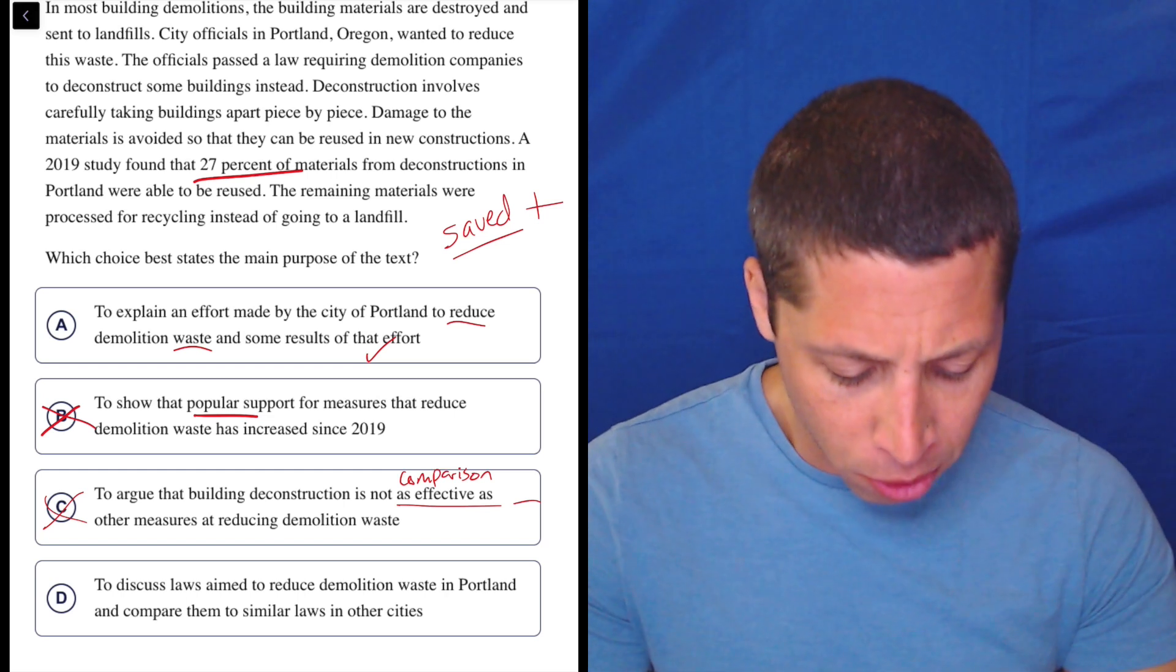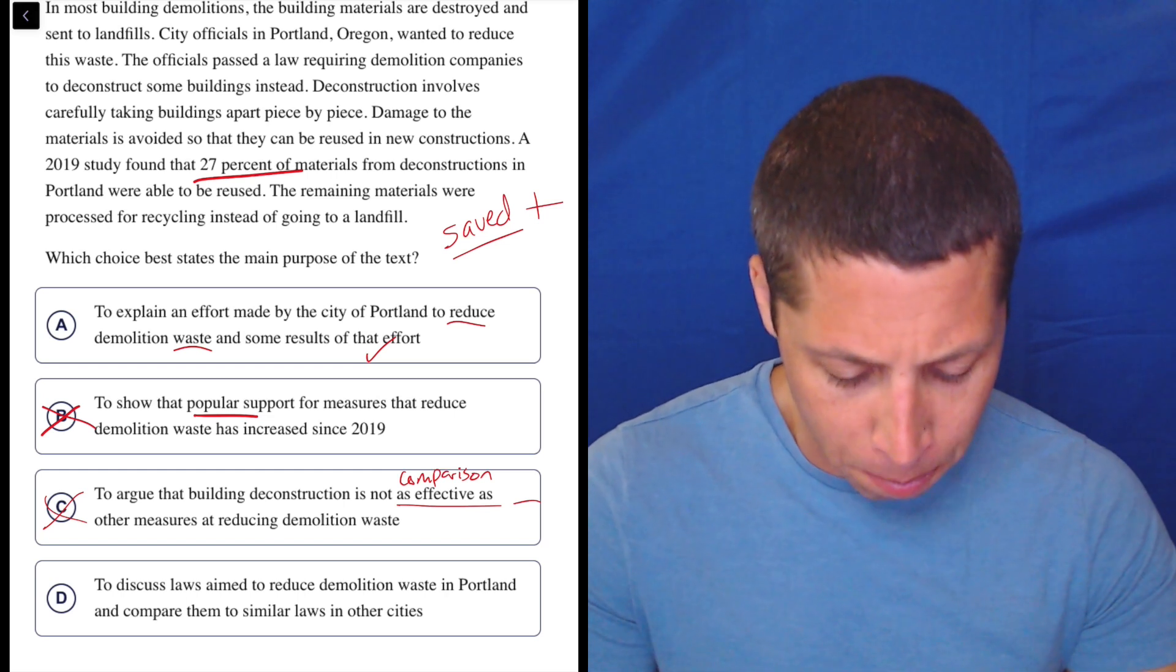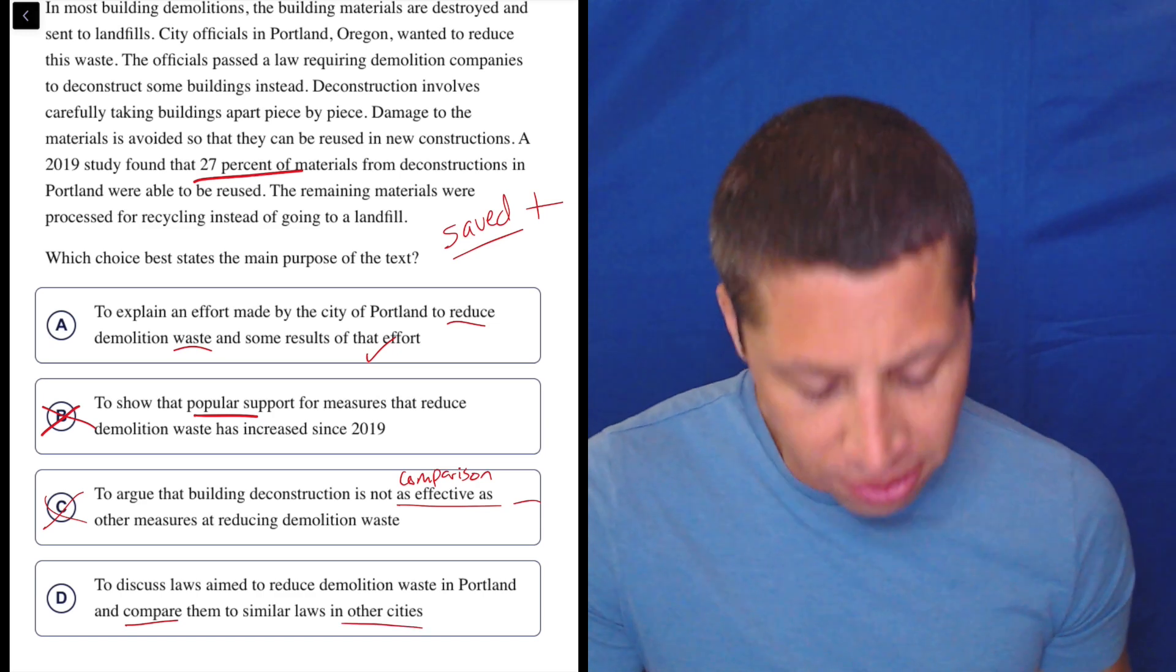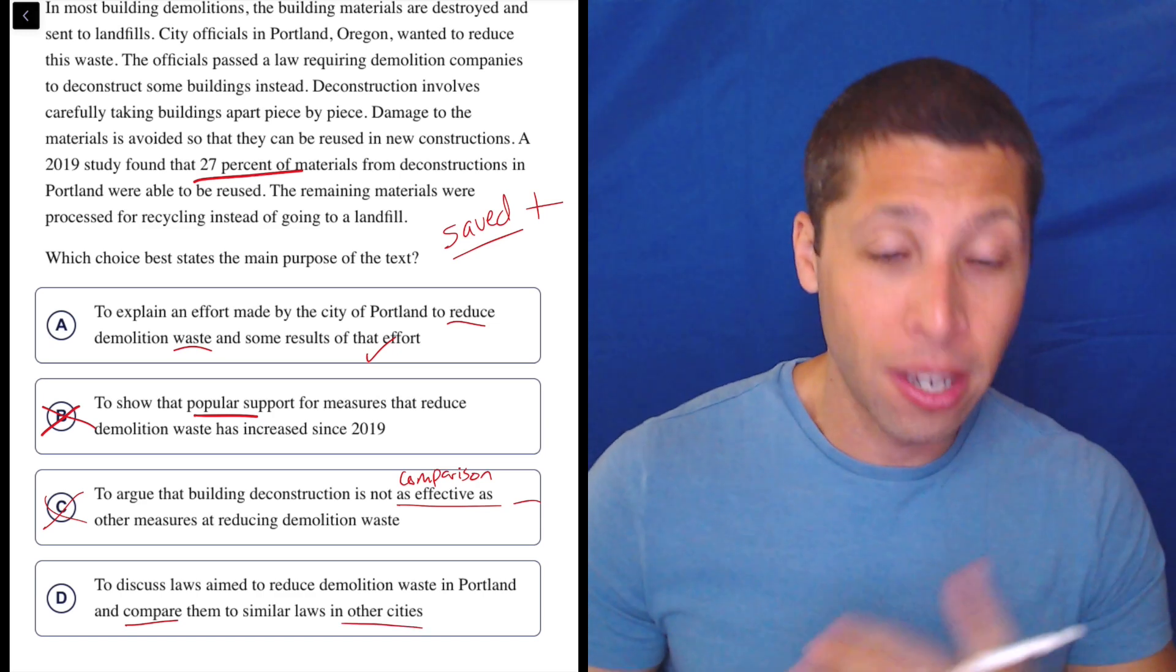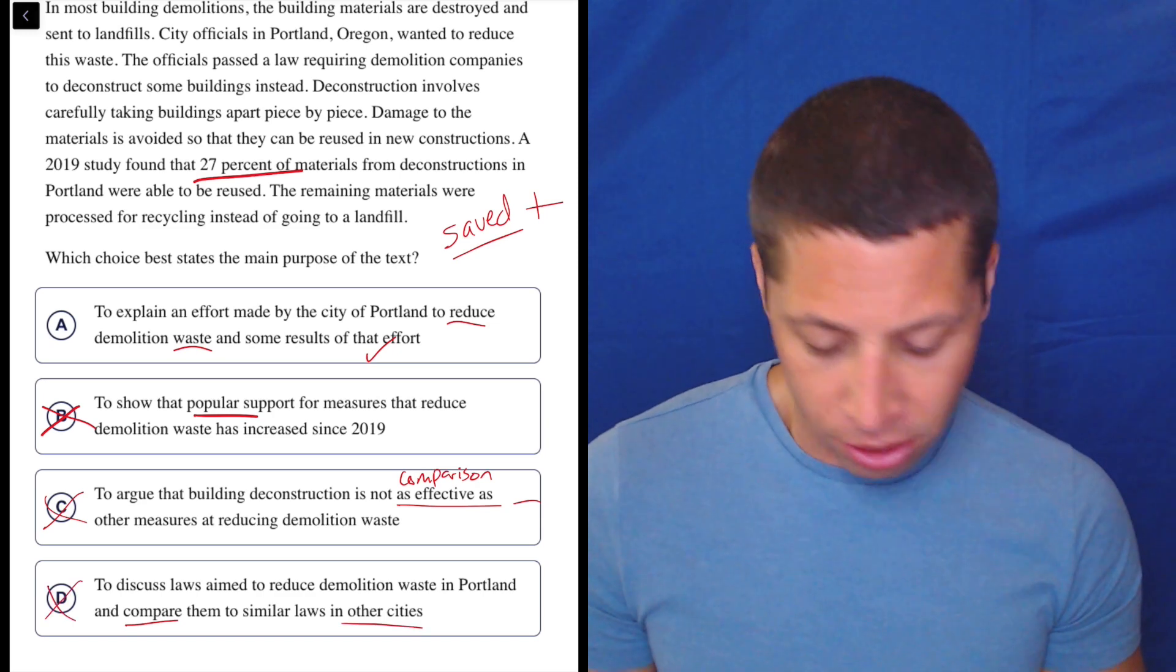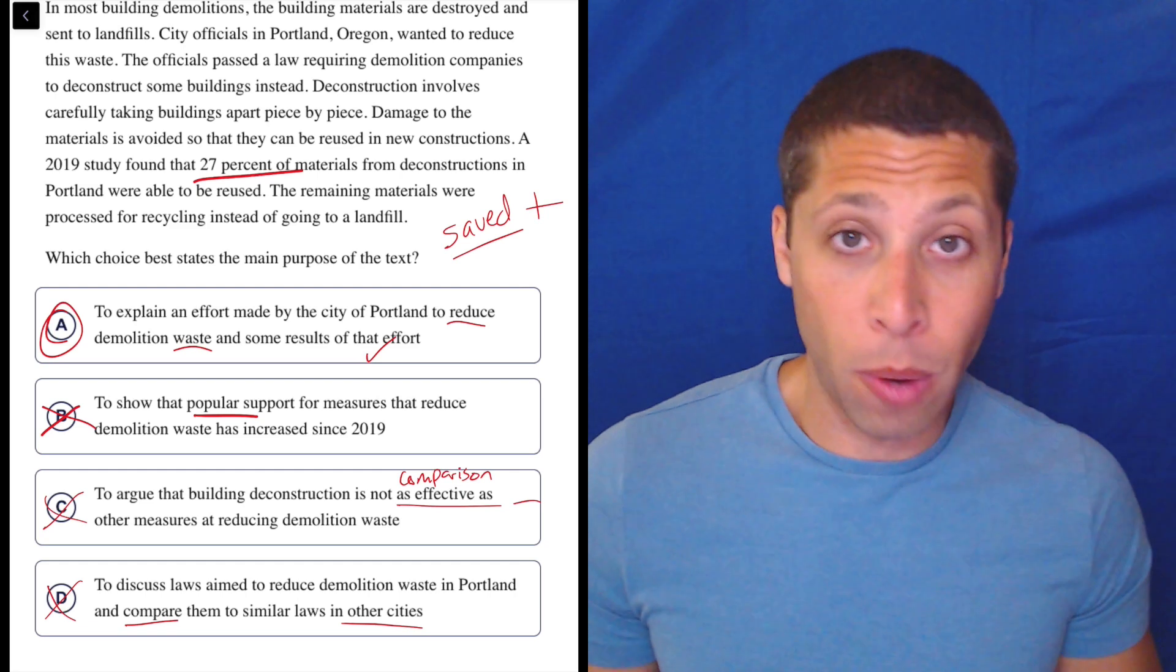D, to discuss laws aimed to reduce demolition waste in Portland and compare them to similar laws in other cities. No, again, there's no comparison. We're not talking about other cities. It's just a classic trap. I don't think it's a hard question. I think this is very easy.